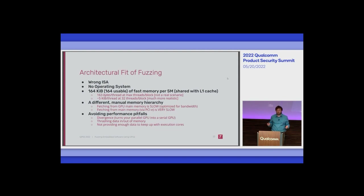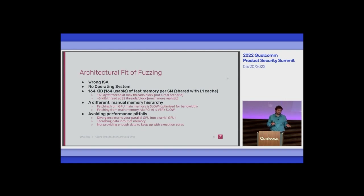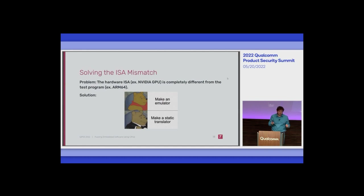So what problems do you have to overcome? One: wrong ISA. Two: absolutely no operating system. Three: the amount of fast memory you have is really tiny — the GPU comes with a lot of big slow memory, but when divided by thousands of execution threads it's not that much, and you have even less fast memory, which is critical to keeping your executions fed. Your memory hierarchy is totally different than what you're used to.